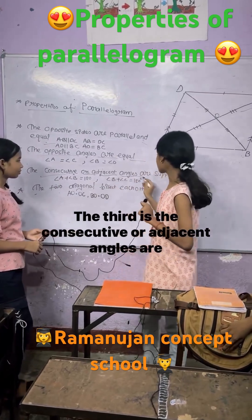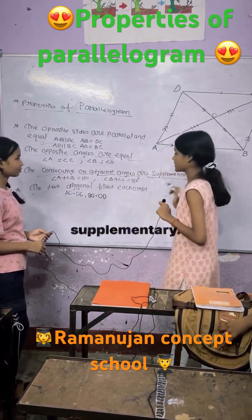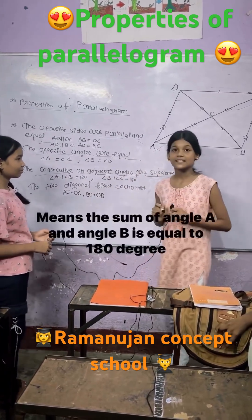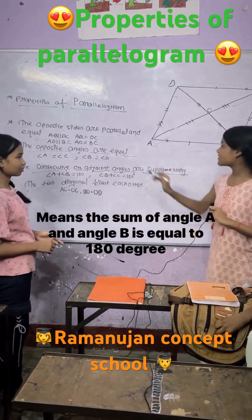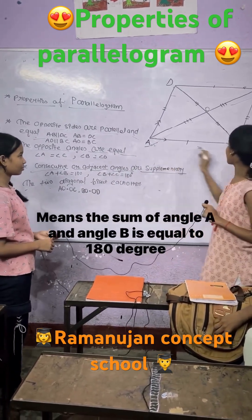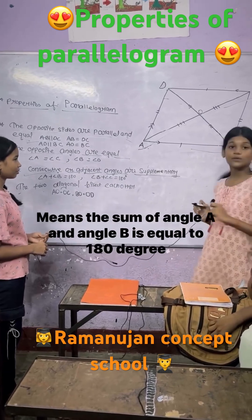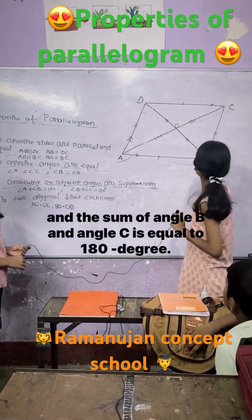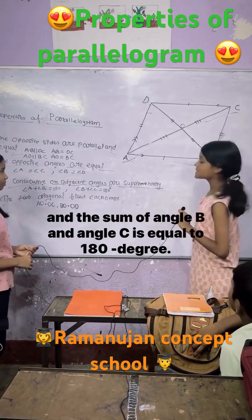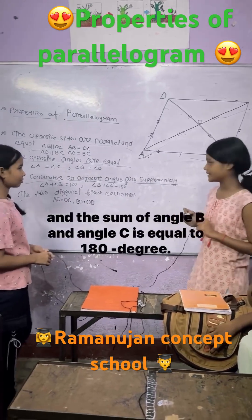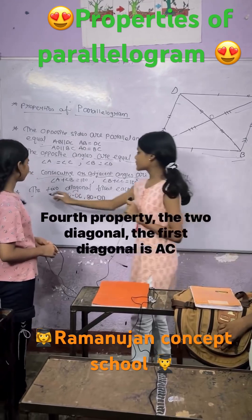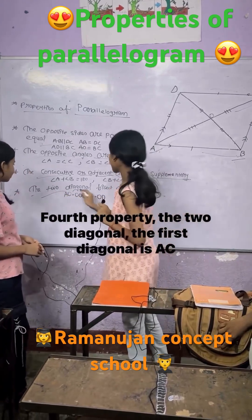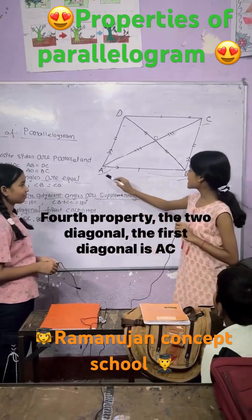The third property is the consecutive or adjacent angles are supplementary, meaning the sum of angle A and angle B is equal to 180 degrees, and the sum of angle B and angle C is equal to 180 degrees.